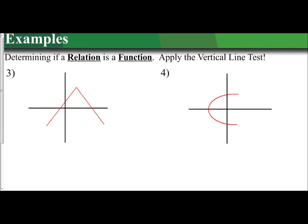The following video is going to go over how to apply the vertical line test to determine if a graph or relation is a function. Remember, the vertical line test says that if a vertical line is drawn on the graph and it intersects more than once, it is not a function.